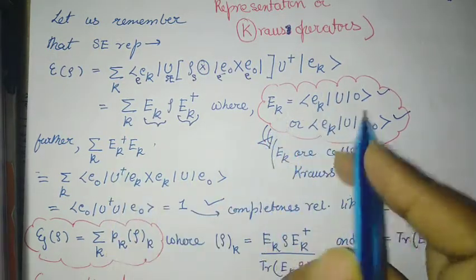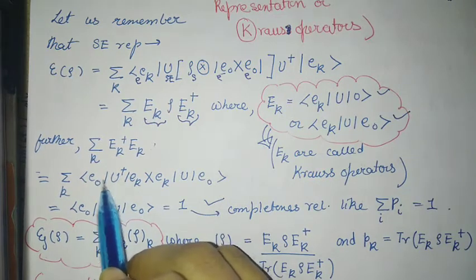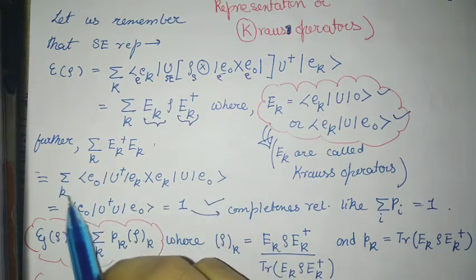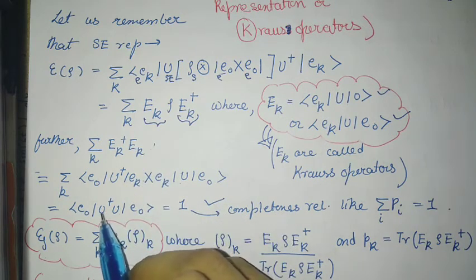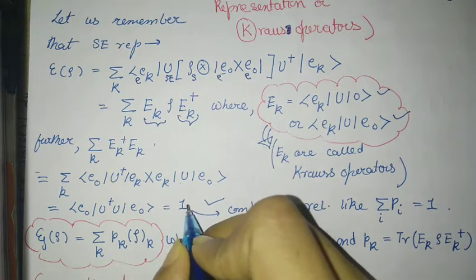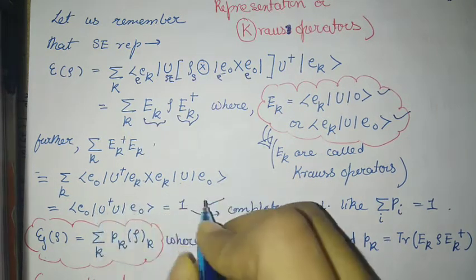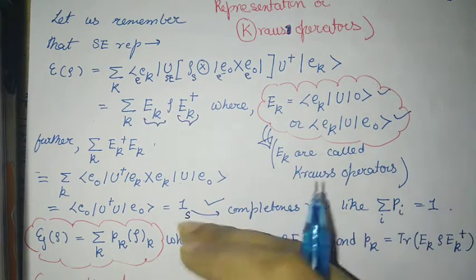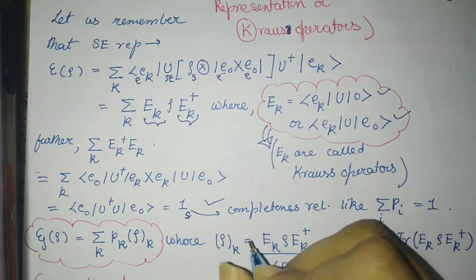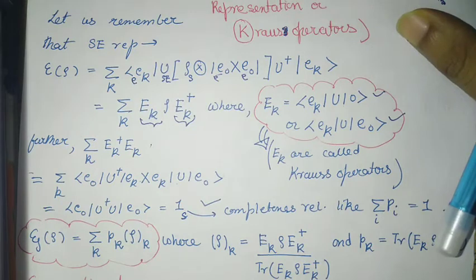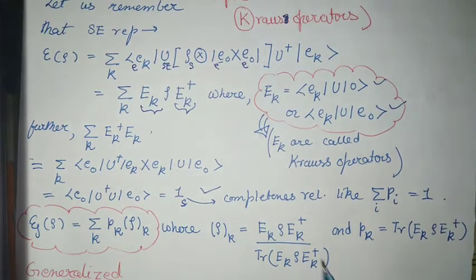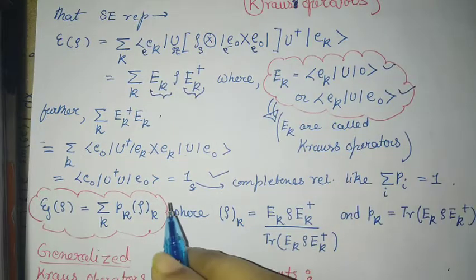The Kraus operators Eₖ satisfy the completeness relation. Let's check that quickly: you put Eₖ†Eₖ and then use the completeness relation on the Hilbert space of the environment to get the final result — identity. The identity here means it is an identity over the system space. Noting which space these Kraus operators belong to is very important. These Kraus operators are particularly helpful in theories called quantum trajectory theories.